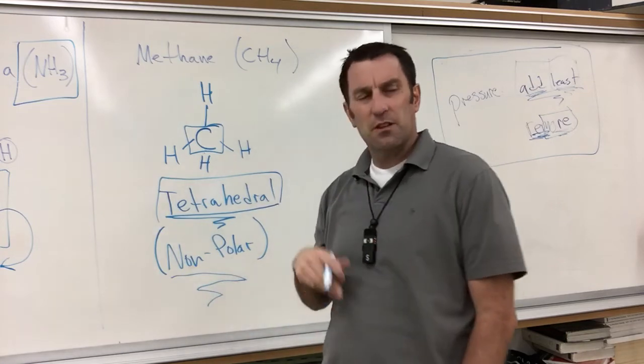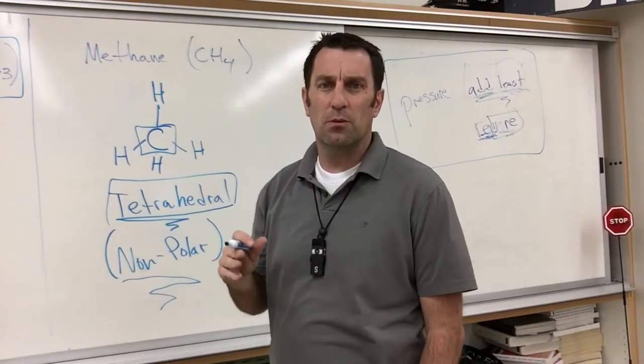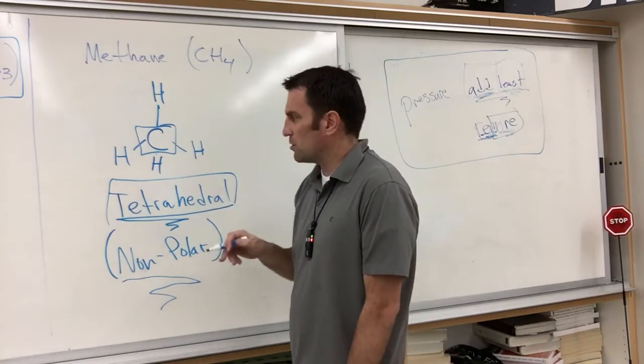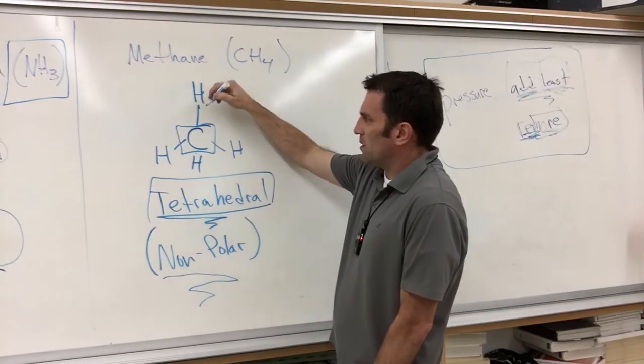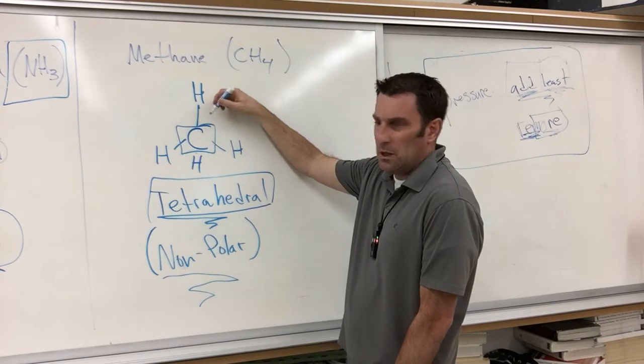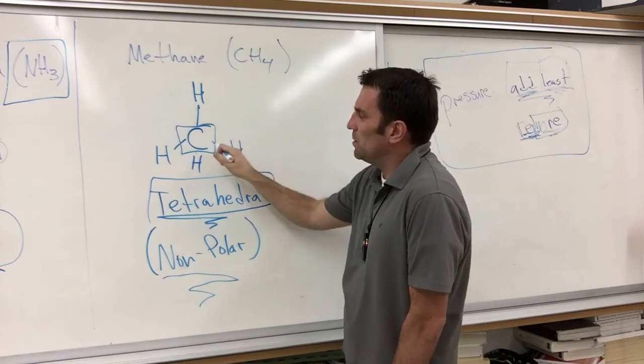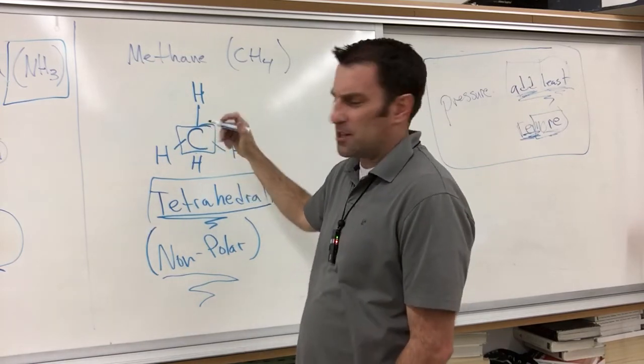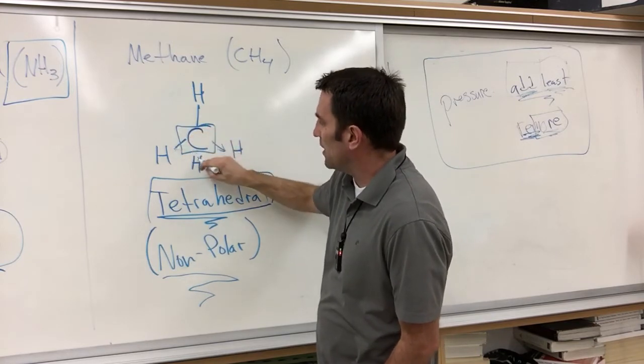That's because when we look at something that's tetrahedral, and we're talking about sharing of electrons, there is a pull, but any pull of an electron from one side to the other is canceled out by the other one canceling it out.